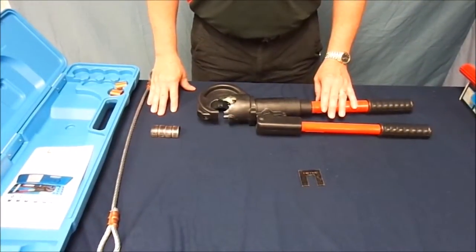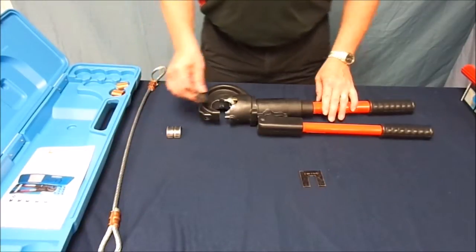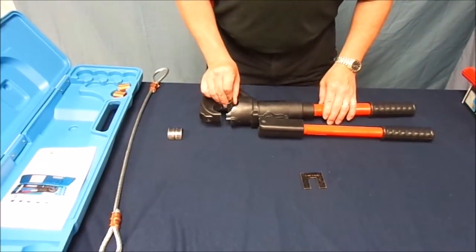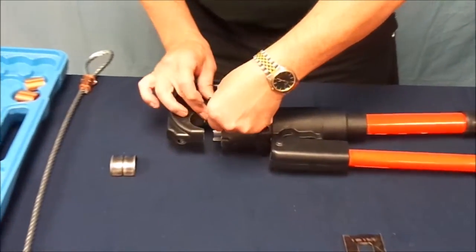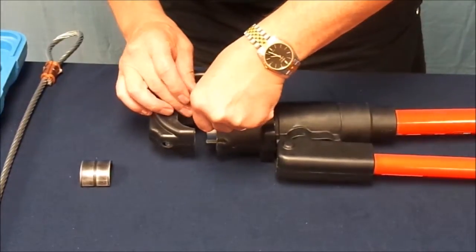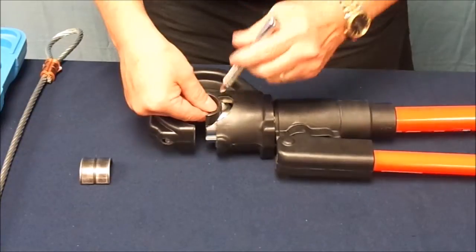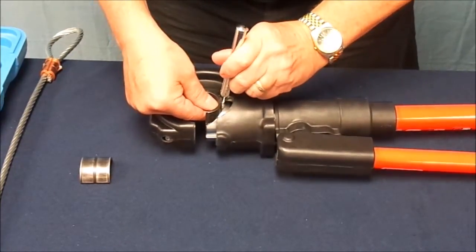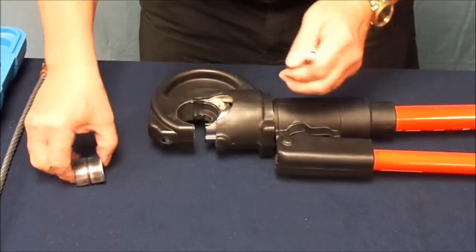In preparing your tool for use, you will need to assemble the desired size die set into the tool head. To do this, push the die release button on the side of the lower jaw and place one die of the set into the lower jaw. Center it and release the button. If it is difficult to depress the die pin, pump the handle several times. This will expose the pin and make it readily accessible.